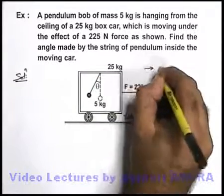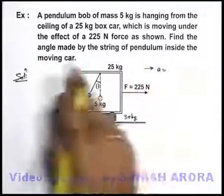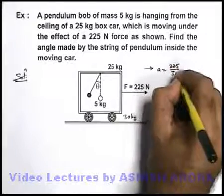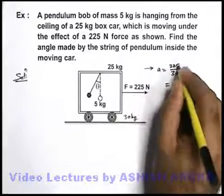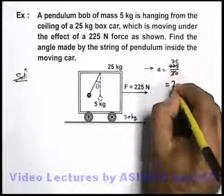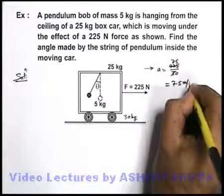So here we can simply state the acceleration, the common acceleration of this system will be 225 divided by 30. That can be written as 75 by 10, this is 7.5 meters per second square.